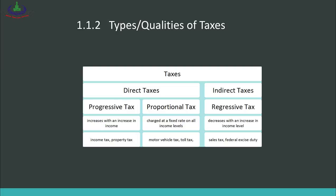Now we talk about types and qualities of taxes. Taxes can be divided into two broader categories: direct taxes and indirect taxes. Direct taxes are those paid by the taxpayer directly to the tax authorities. Indirect taxes are those not paid directly by the taxpayer; rather, they involve a third party which collects tax from persons and then submits or pays it to the tax authority. An example of direct tax is income tax, and an example of indirect tax is sales tax.